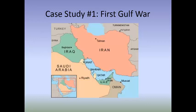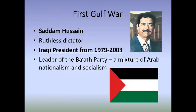With that in mind, let's look at our first case study: the First Gulf War, which took place in 1990 and 1991 between Iraq and Kuwait, but eventually involved several other countries. Saddam Hussein was the Iraqi president - a dictator who led Iraq from 1979 until 2003. He led an authoritarian regime with no free democratic elections, and he suppressed opposition with brutal force when necessary.